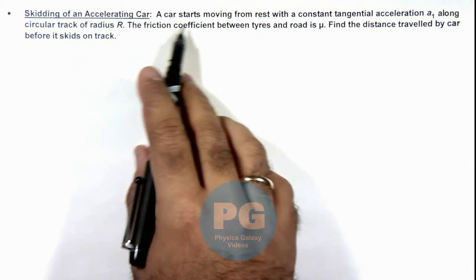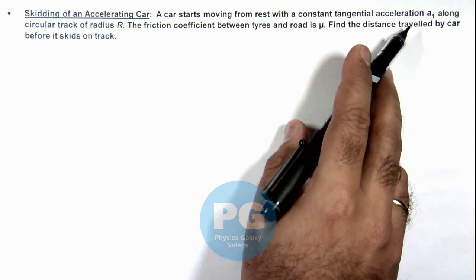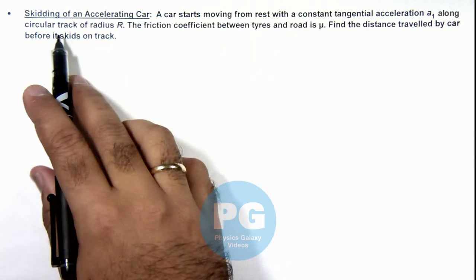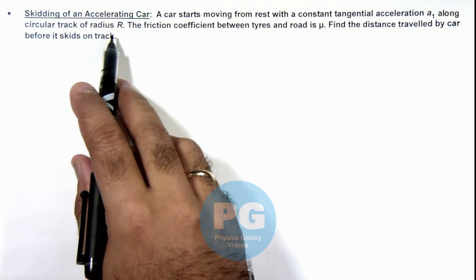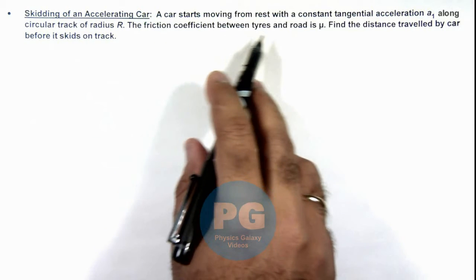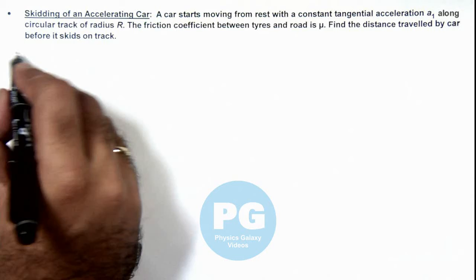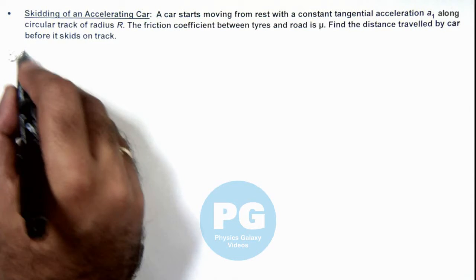Here we are given that a car starts moving from rest with a constant tangential acceleration a_t along a circular track of radius R. The friction coefficient between tires and road is μ and we are required to find the distance traveled by the car before it skids on the track.